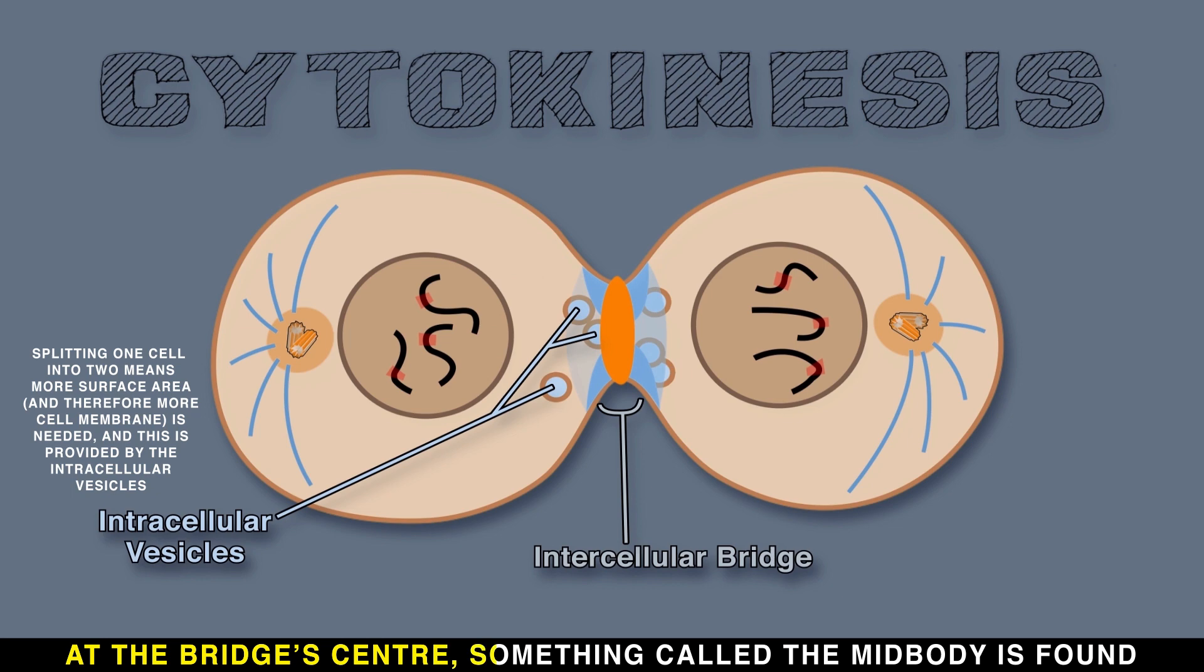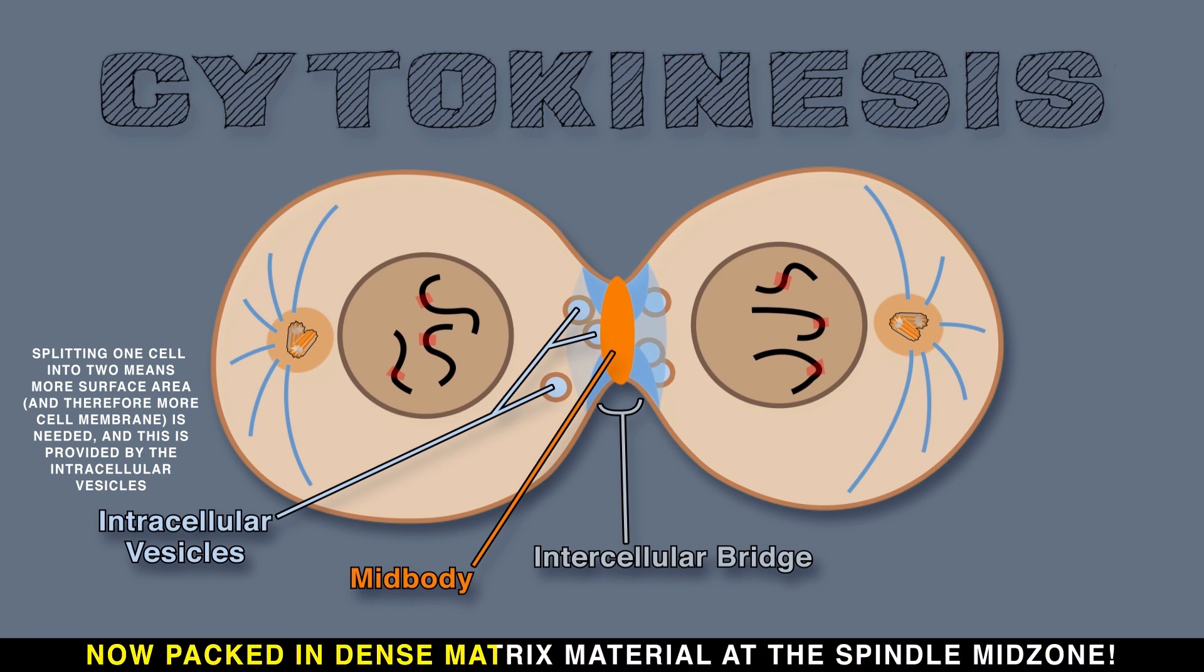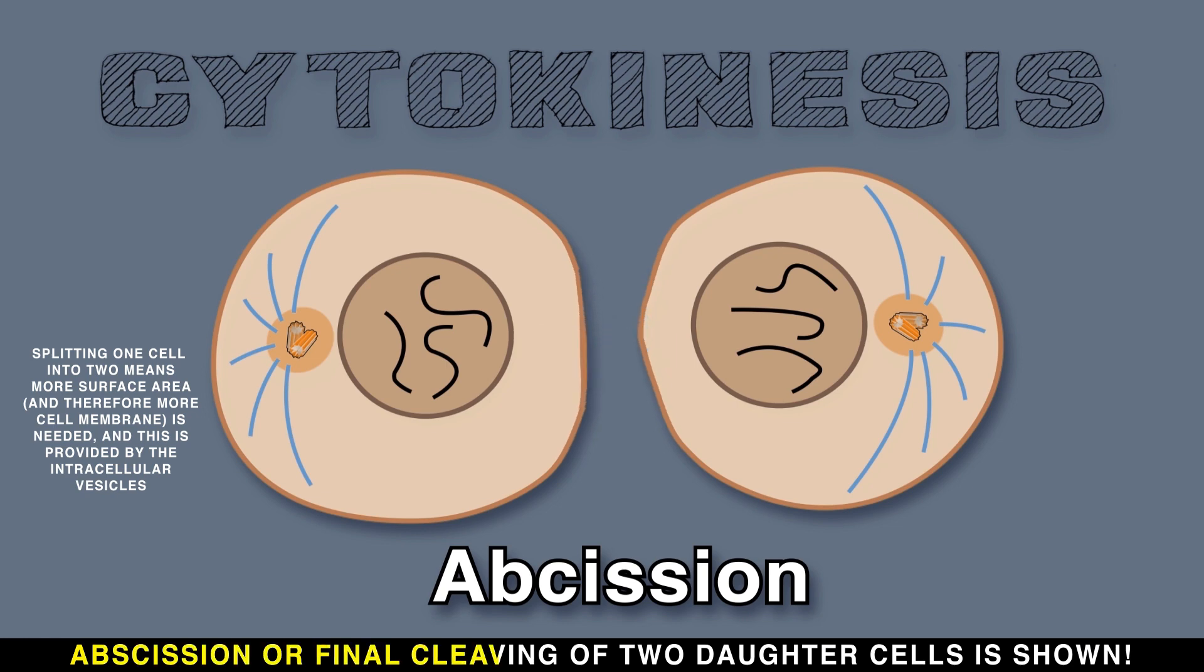At the bridge's center, something called the mid-body is found where the interpolar microtubule leftovers still abound. Now packed in dense matrix material at the spindle mid-zone. Abscission or final cleaving of daughter cells is shown.